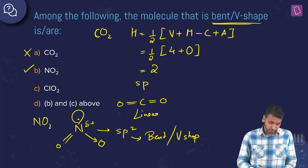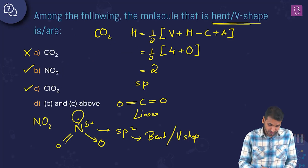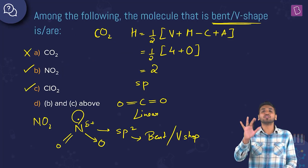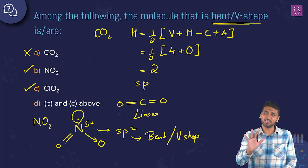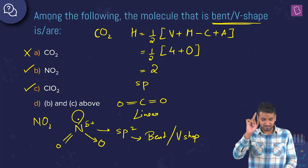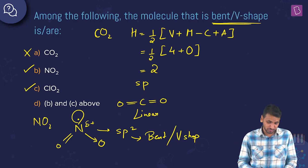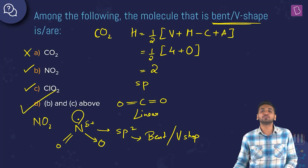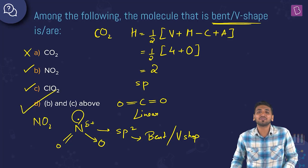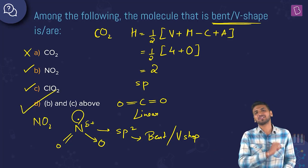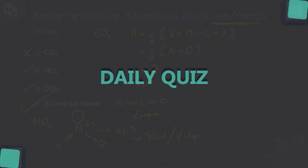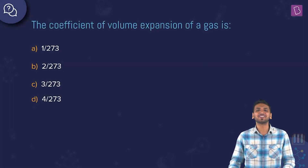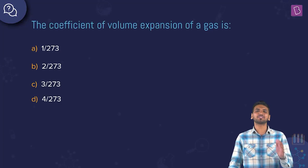Both B (NO₂) and C (ClO₂) have bent or V-shape geometry, so option D is the correct answer to this question.